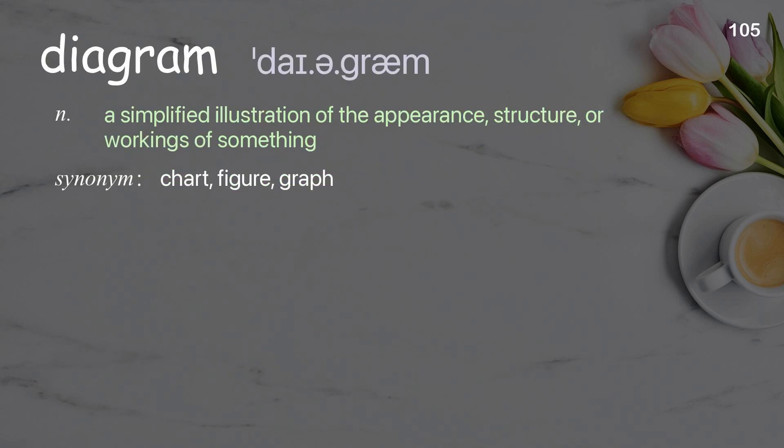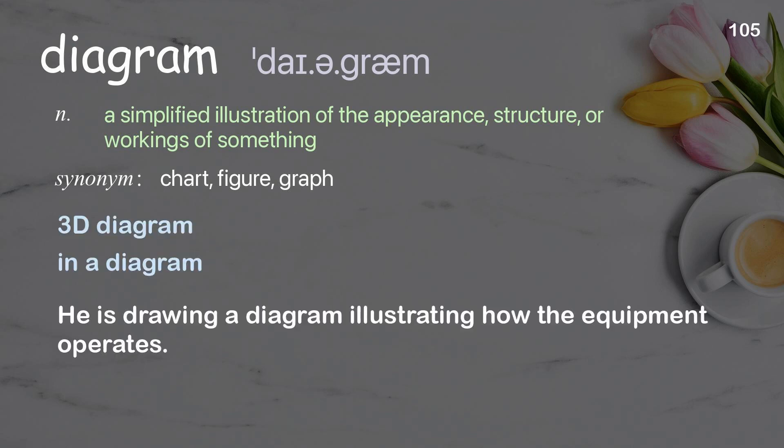Diagram: A simplified illustration of the appearance, structure, or workings of something. Examples: 3D diagram, in a diagram. He is drawing a diagram illustrating how the equipment operates.